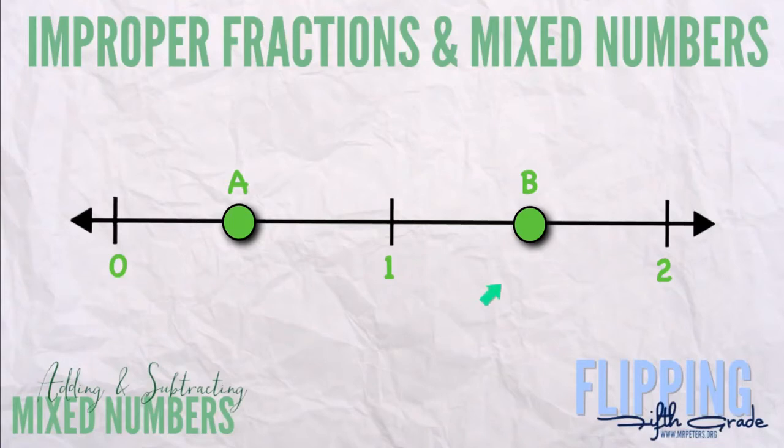So we're going to look at this number line, and we see A and B. We're going to try to come up with an appropriate name for A first. So we look at it, it's right between 0 and 1. So if we think of something in the middle of 0 and 1, we give it the name of 1 half.